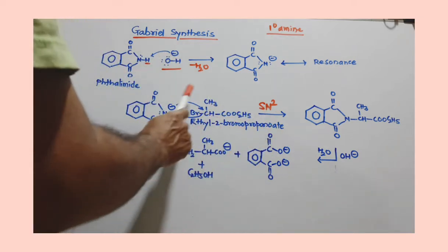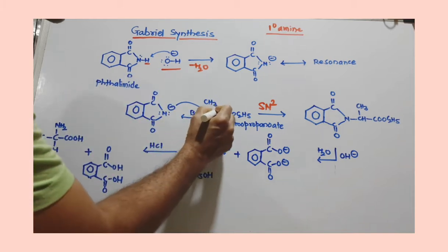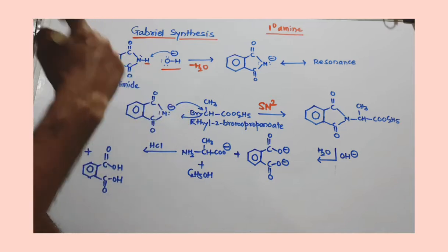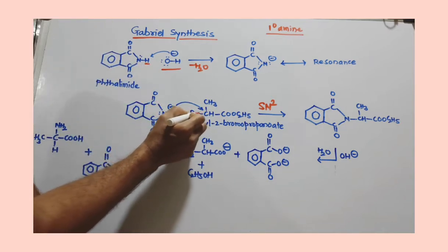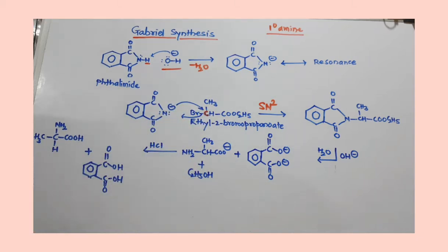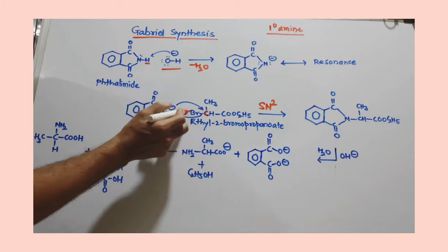Now you can see here, this is alpha carbon where the bromine is attached, where the Br is attached. This is actually acting as a leaving group. And this is the carbon where SN2 reaction is taking place. This nucleophile is now attacking this carbon where halogen is attached.